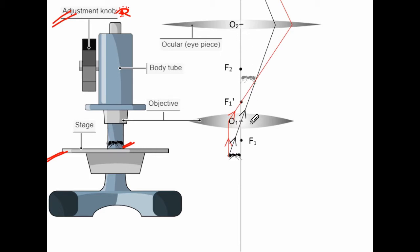When lenses are kept together, one lens produces an image, and this image acts as a virtual object for the next lens. The image produced by the first lens behaves as the virtual object for the second lens.